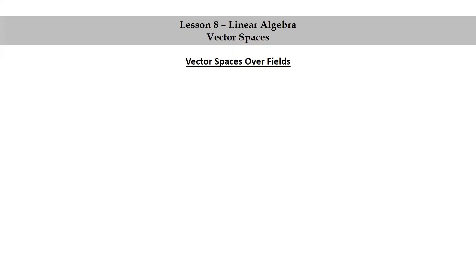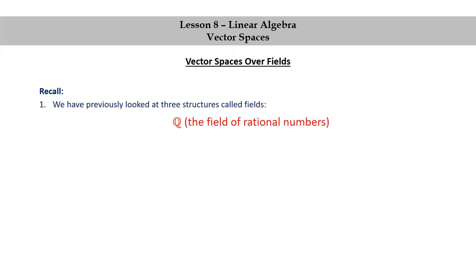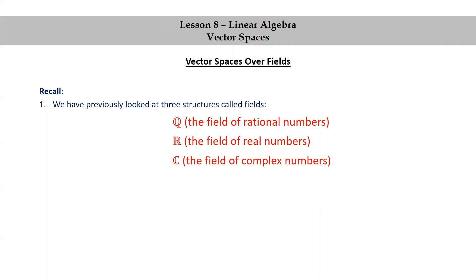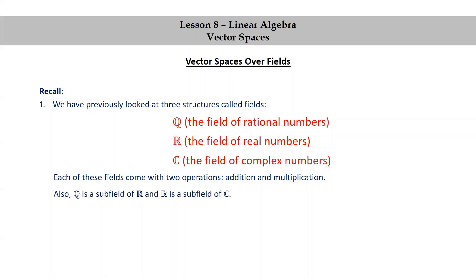Vector spaces over fields. Recall the following: we have previously looked at three structures called fields — Q, the field of rational numbers; R, the field of real numbers; and C, the field of complex numbers. Each of these fields comes with two operations: addition and multiplication. Also, Q is a subfield of R, and R is a subfield of C.